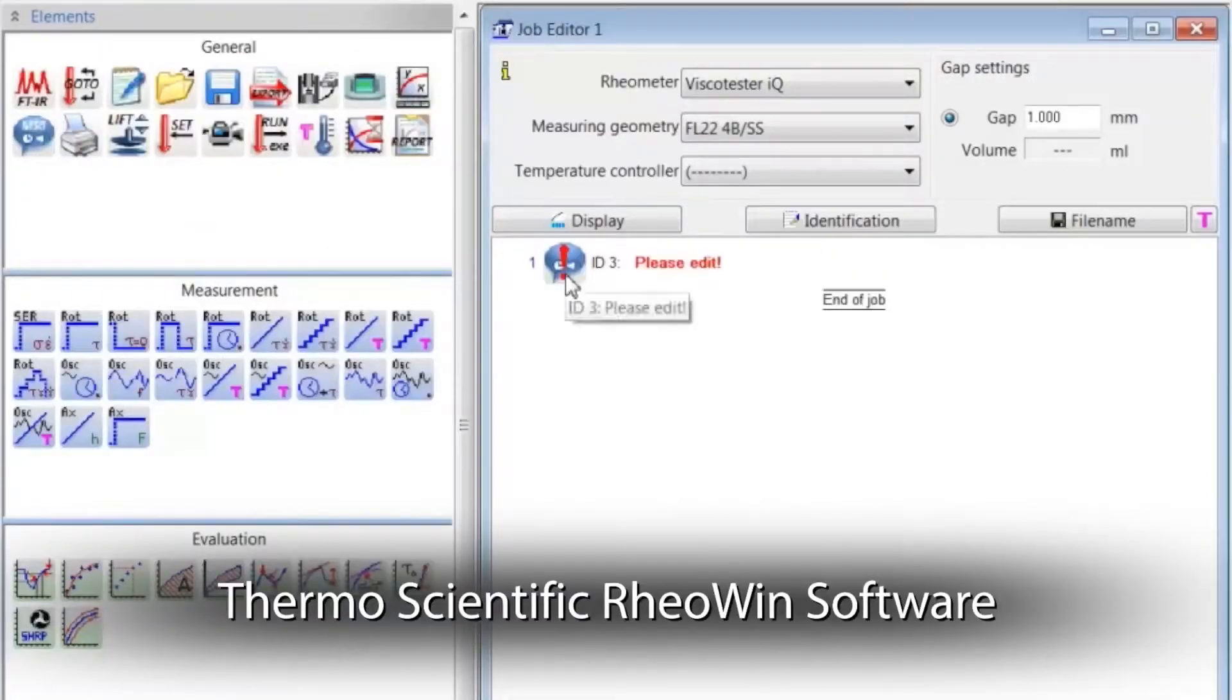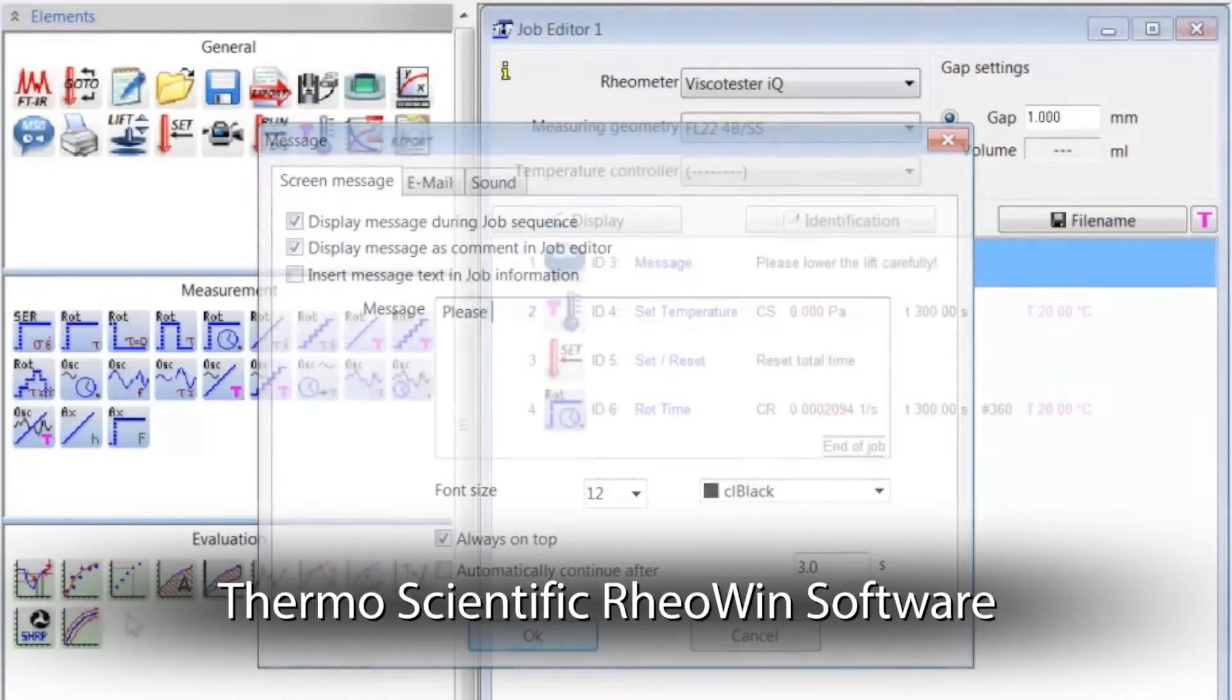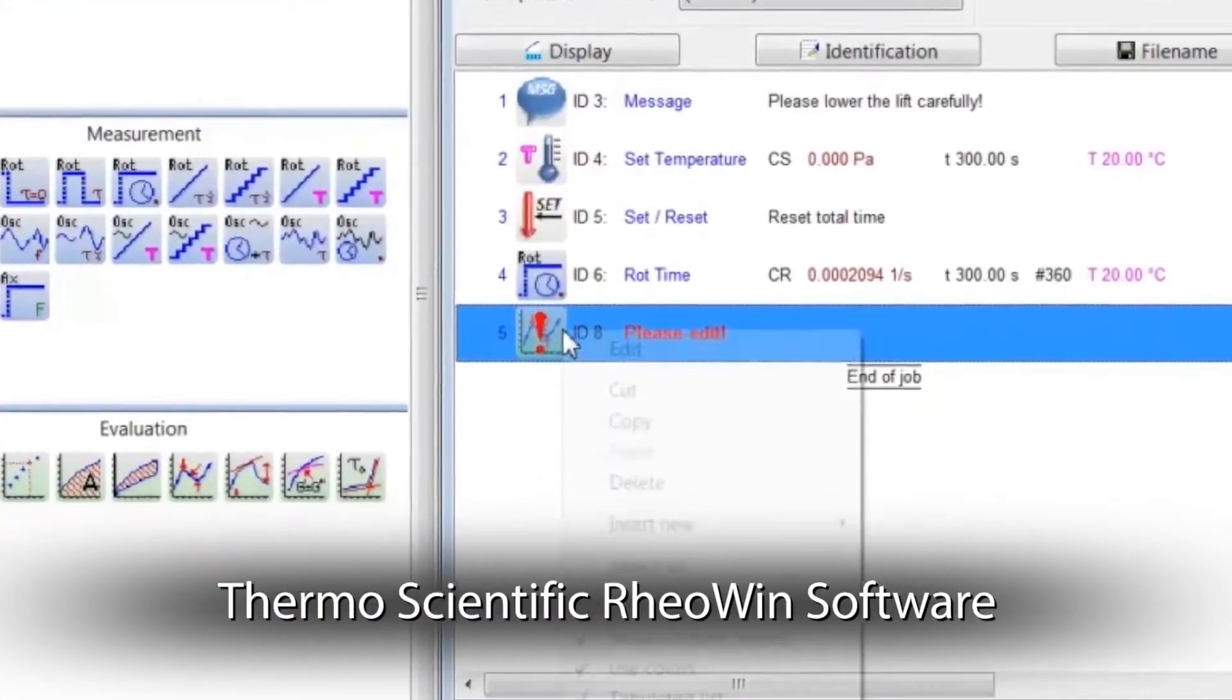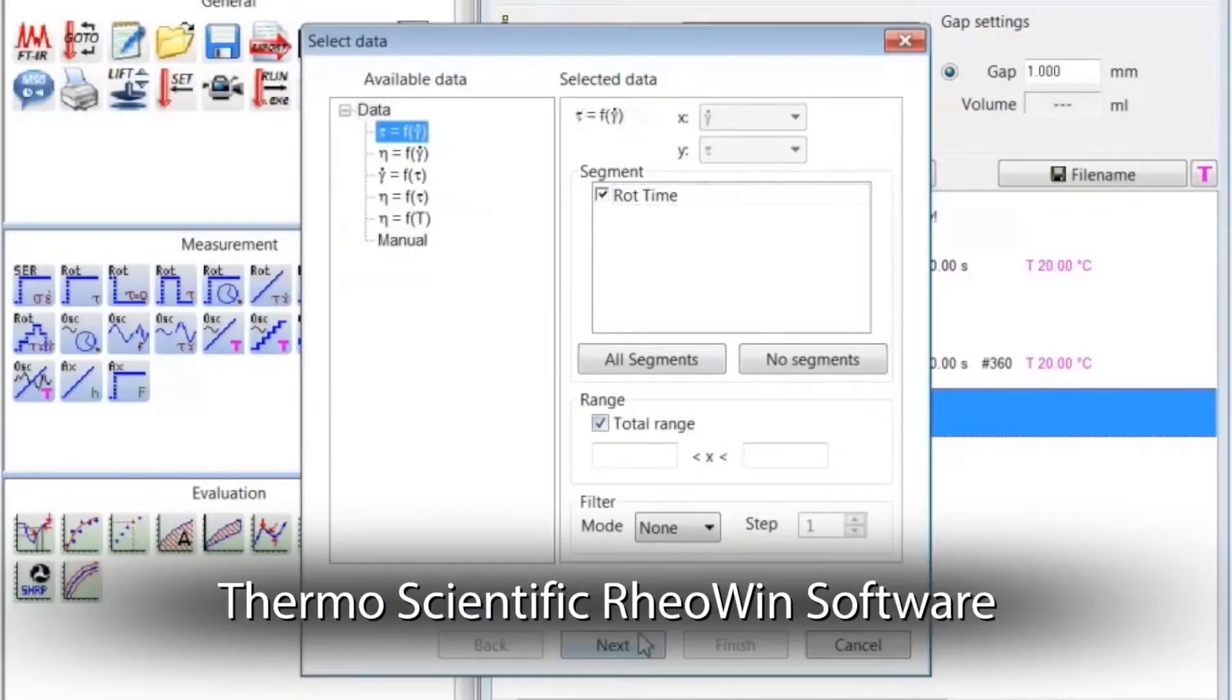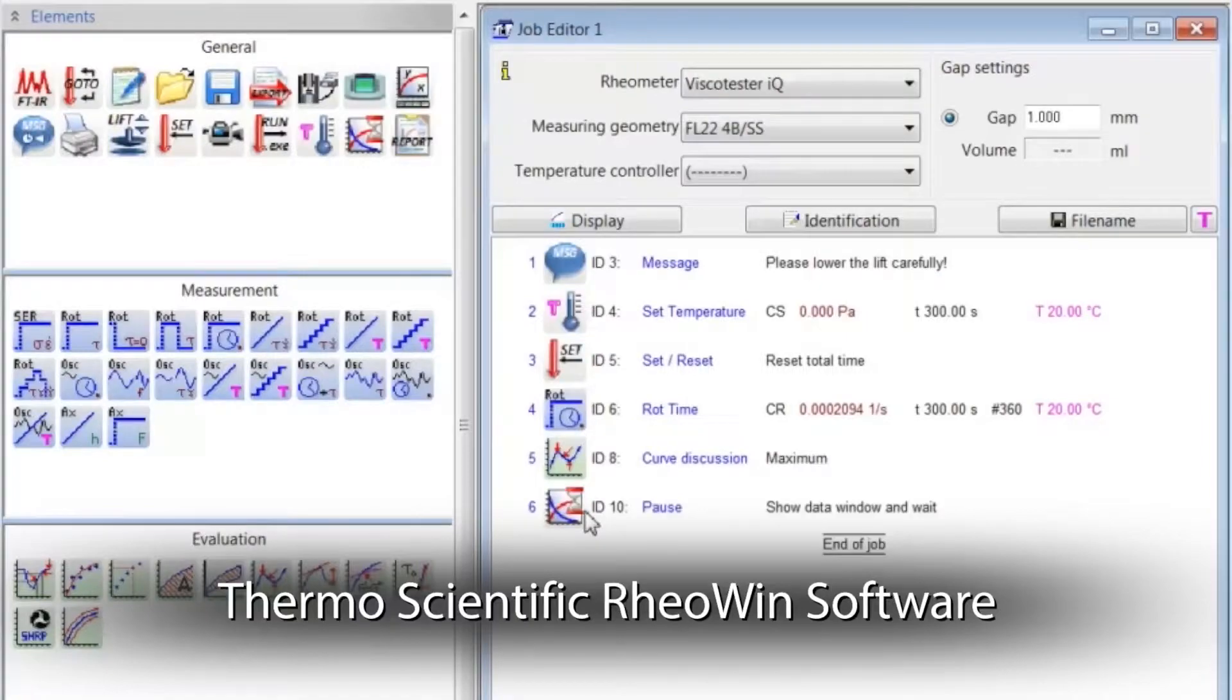For laboratories that require fully automated jobs, including local language messages for user guidance, data analysis, and documentation, our RioWind software, available on all of our ThermoScientific rheometers, provides maximum measuring flexibility.